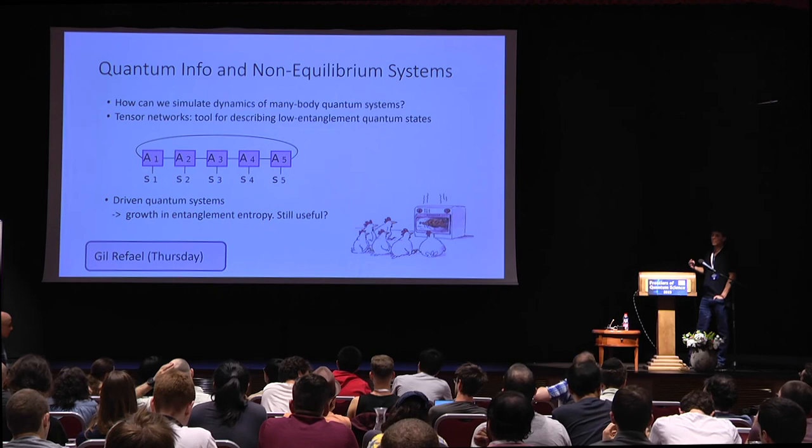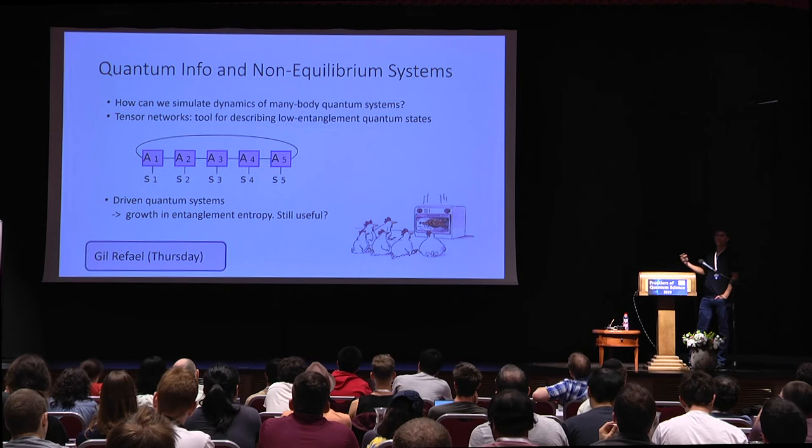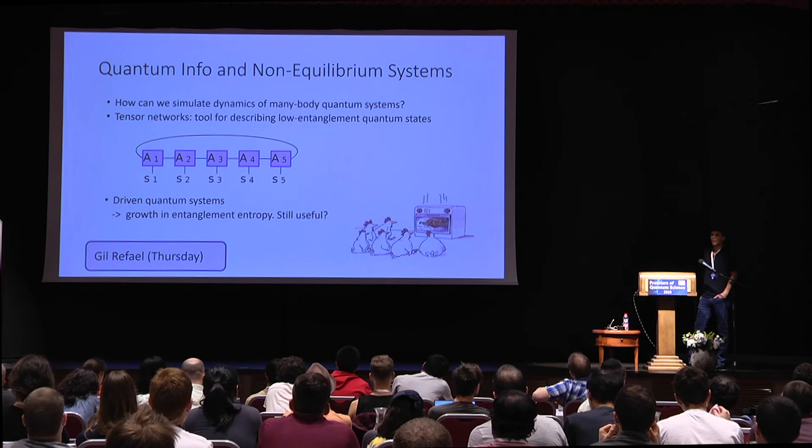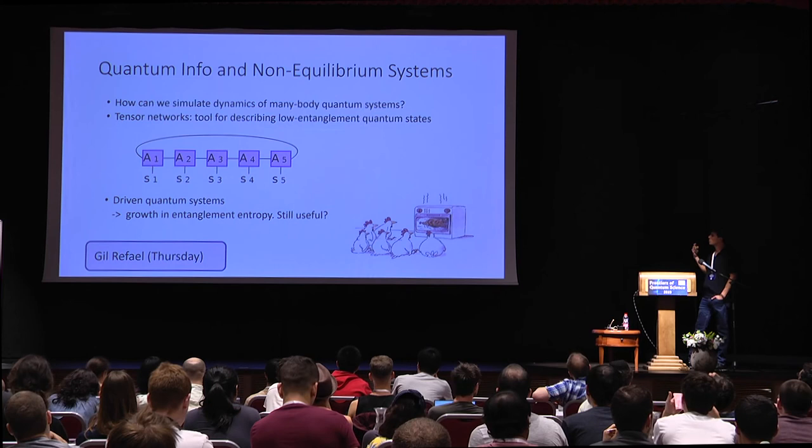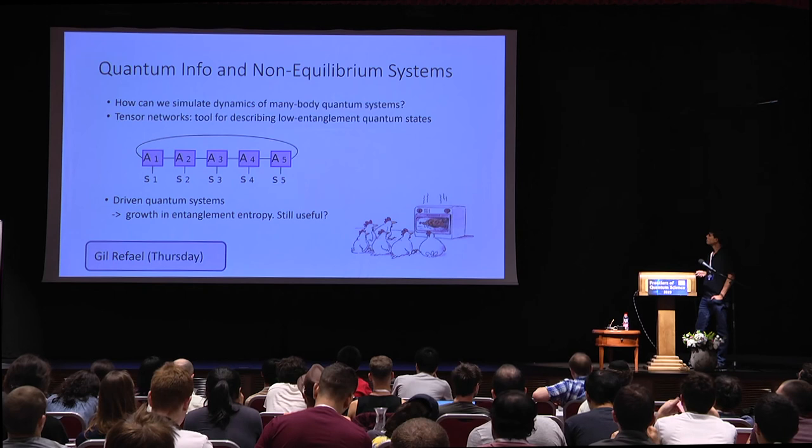Finally, we'll discuss how to simulate quantum systems using ideas from quantum information theory. Gil will discuss tensor networks as a tool for describing low-entanglement quantum states and using them to simulate quantum systems. In particular, despite entropy growth in non-equilibrium quantum systems as a function of time, you can still use tensor networks for classical simulation of quantum systems. This will be discussed Thursday and Friday.